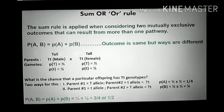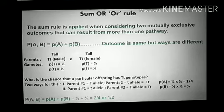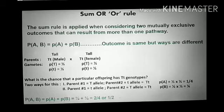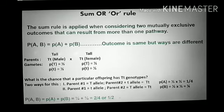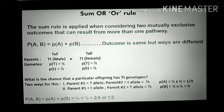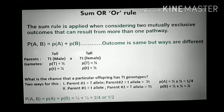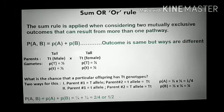If we want to know the probability of getting 3 or 5, we add the probability of getting 3 and the probability of getting 5: 1 by 6 plus 1 by 6, which comes out to be 1 by 3. These are mutually exclusive events.